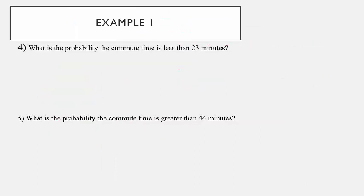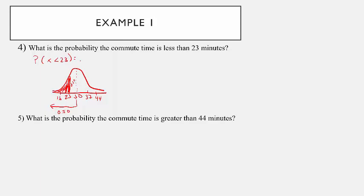What is the probability that the commute time is less than 23 minutes? Re-sketching the density curve centered at 30, with values 23, 16, 37, and 44 marked, we shade the area to the left of 23. We know the area below the mean is 0.50, and from 30 to 23 — one standard deviation — is 0.34. So the answer is 0.50 minus 0.34, which equals 0.16.